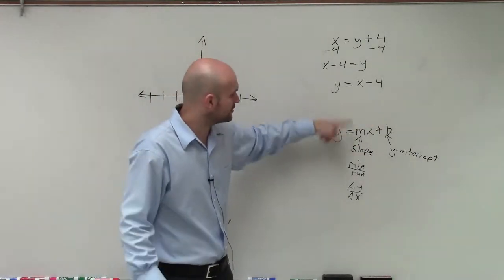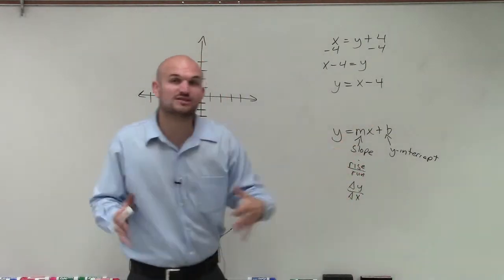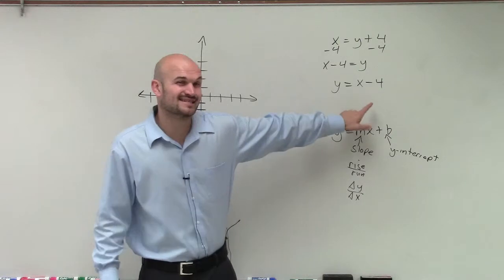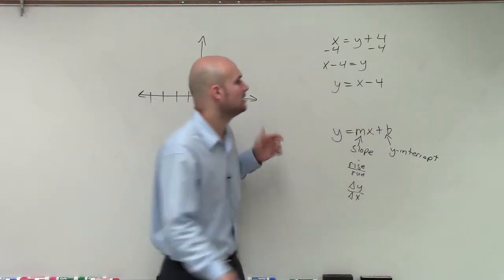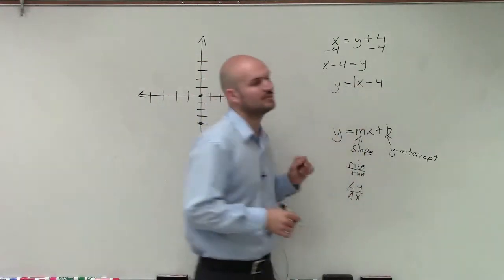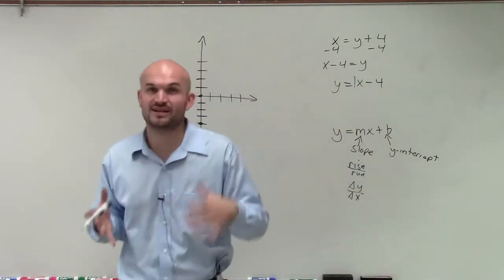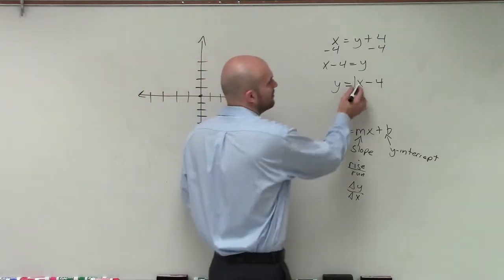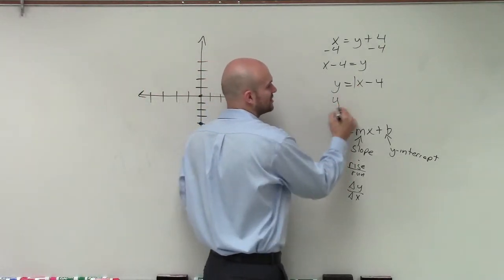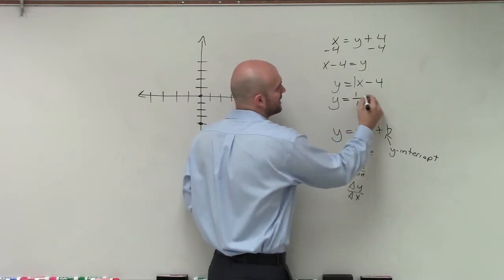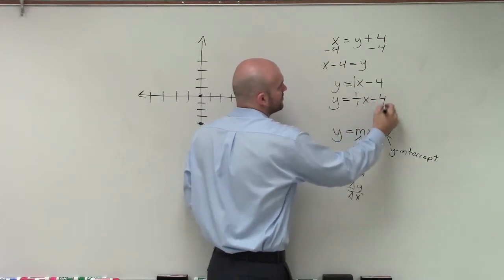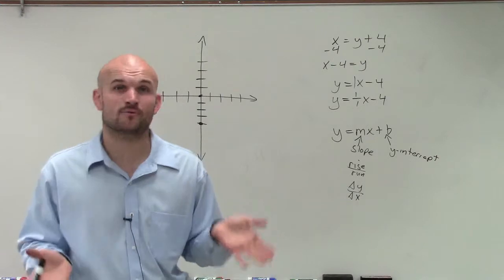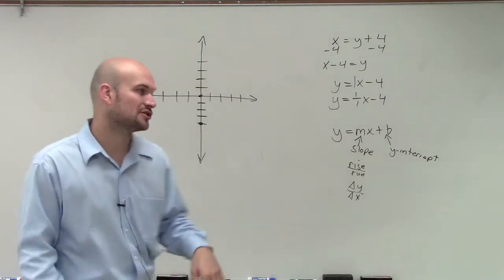Now we need to determine the slope. The slope, remember, is written as a fraction. Right now I'm not seeing a number written in front of x. We know that when there's no number specifically written there, we can always place a 1 in front. So let's write it as y equals 1 over 1 times x minus 4, because 1 divided by 1 is 1, and 1 times x is still x.